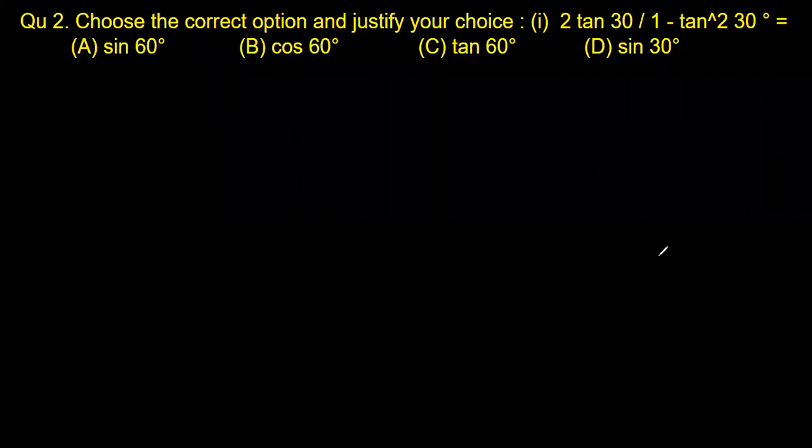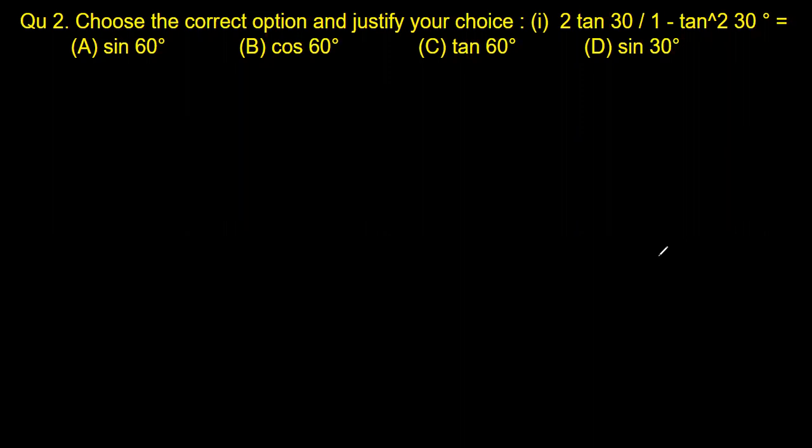So you have to choose the correct option and justify your choice. So look at this: 2 tan 30° divided by 1 minus tan² 30°.